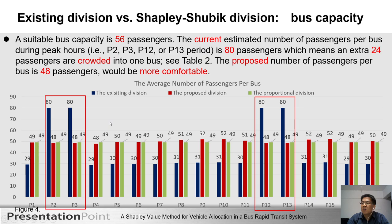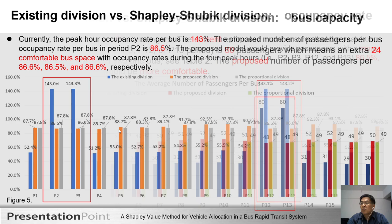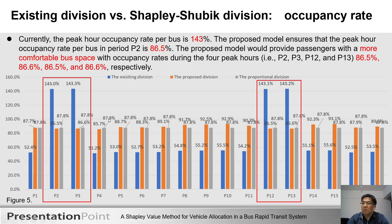Let's take a look at this graph. A suitable bus capacity is 56 passengers. The current estimated number of passengers per bus during peak hours P2 to P17 is 80 passengers, which means an extra 24 passengers are crowded into one bus. The proposed number of passengers per bus is 48 passengers, so it would be more comfortable.